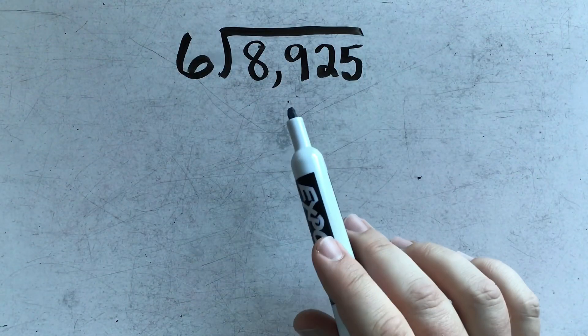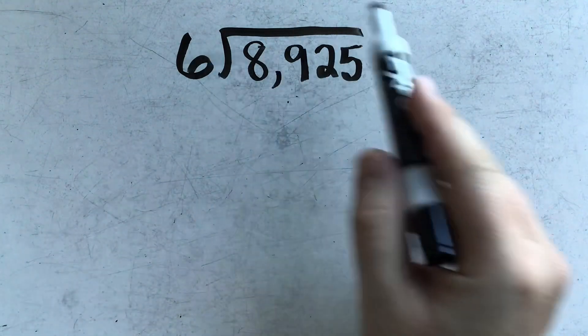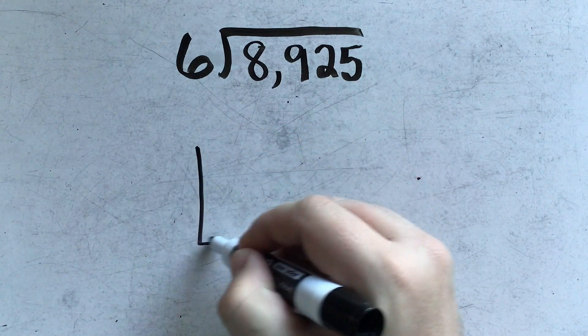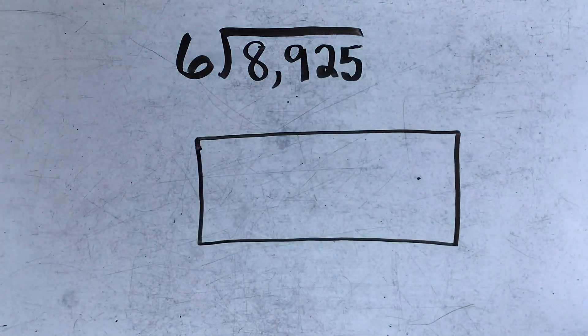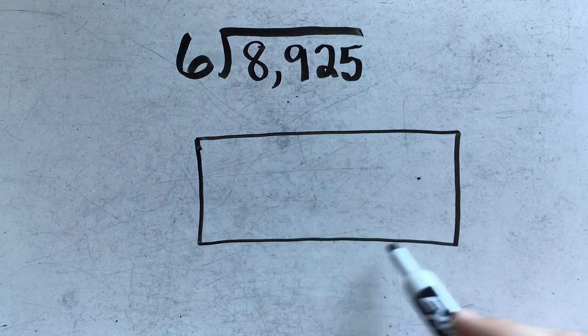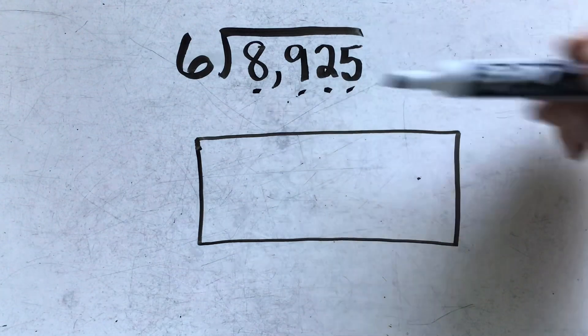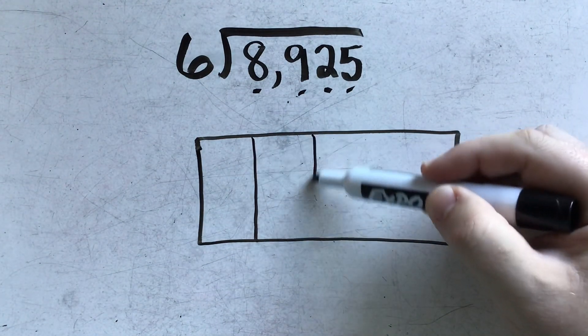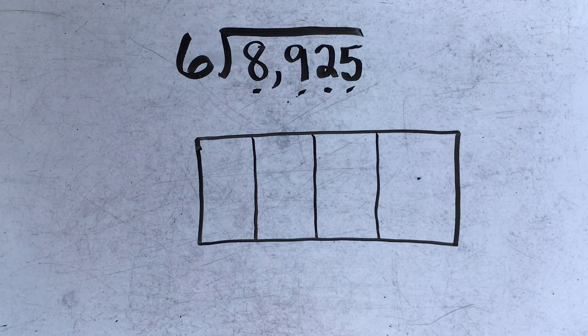So if I have this problem 8,925 divided by 6, the way that I'm going to set it up is not using the traditional division box, but instead I'm going to draw a rectangle, and inside of this rectangle I want a space for each one of my digits in the problem. So since I have four digits in my problem, I want four separate boxes inside of this rectangle.